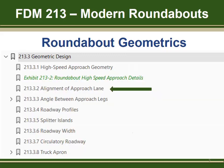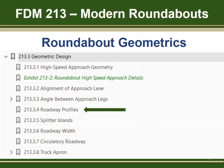FDM 213.3.2 discusses the benefits and desire for an offset left alignment. FDM 213.3.3 provides guidance on the allowable intersection angle between two roadways. FDM 213.3.4 expresses a desire to have a flat profile through the roundabout, which will allow the circulatory roadway to slope to the outside all the way around the roundabout.